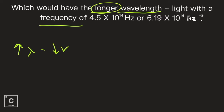Since both of these numbers are in scientific notation, the first thing we need to notice is that the exponents are the same. If the exponents are the same, now we can compare the number in front. 6.19 is larger than 4.5, and we're looking for the smaller one. So 4.5 times 10 to the 14 Hertz is going to have the longer wavelength of light.